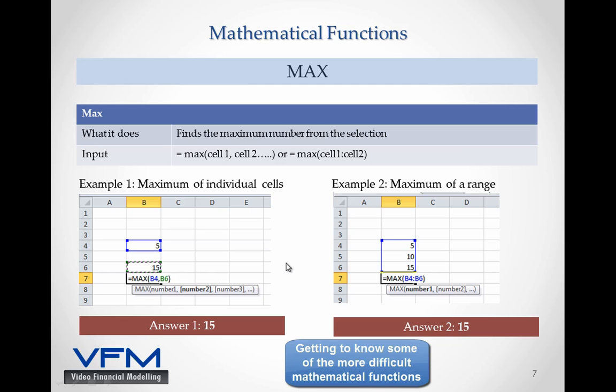In the first example, we take the max of B4 and B6, and obviously the maximum number out of 15 and 5 is 15. We do the same with example 2 and find the maximum of that range again is 15. So let's look at some examples of max.